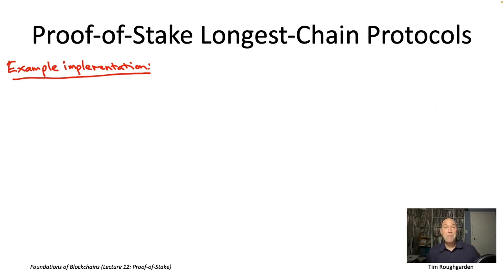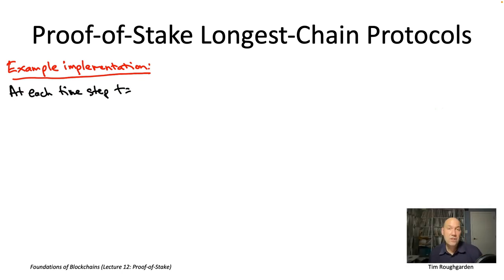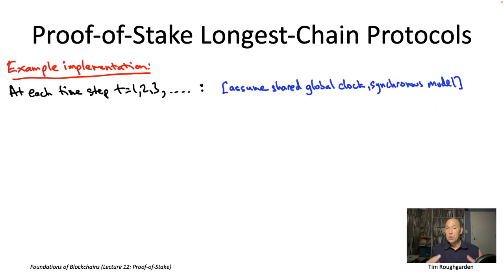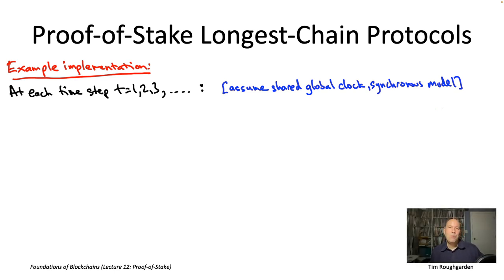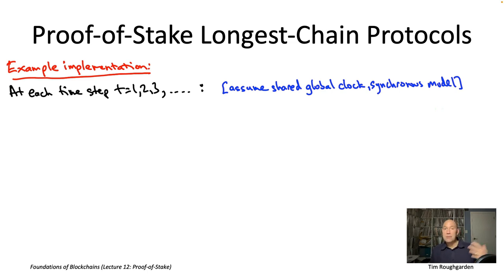In proof-of-stake protocols, unlike proof-of-work protocols, one generally assumes a global shared clock or a good approximation of one, and protocols typically proceed in designated time steps. Additionally, and unlike in the BFT protocol case, we will be assuming the synchronous model, not the partially synchronous model. That means we assume some known bound capital delta — the maximum message delay — so every message any node sends will be received at its destination within delta time steps.